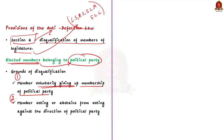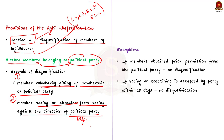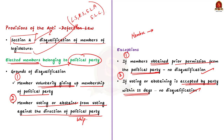The second situation is that if the member votes or abstains from voting against the direction of the Whip, then he or she can be disqualified. However, if the member votes or abstains from voting by obtaining prior permission from the political party, they will not be disqualified. Also, if the member has voted or abstained and this is accepted by the political party within 15 days, the member will also not be disqualified.